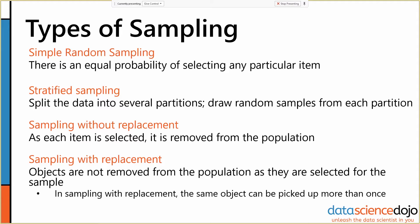There's stratified sampling, where we split the data into several partitions and draw random samples from each partition. If we're doing stratified sampling with equal-sized partitions, then that's equivalent to simple random sampling.